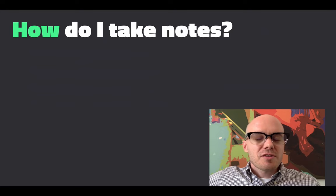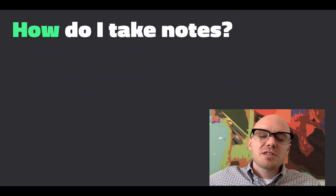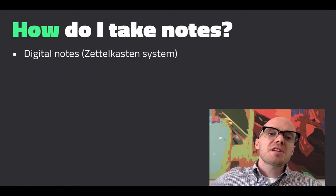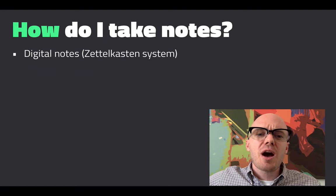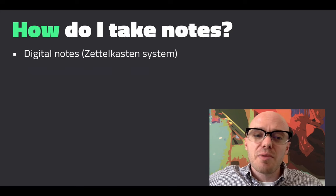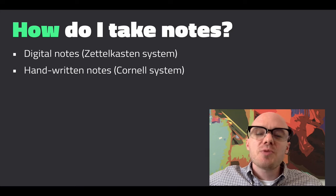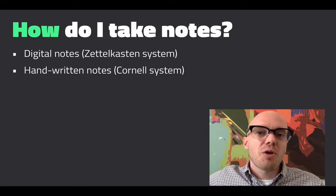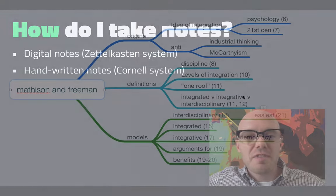So I've talked about how you take notes. Let's talk about how I take notes. I'm going to give you two examples. The first is going to be a digital example, and I'm going to show you how I use what's called the Zettelkasten system to build my own personal knowledge database. Then I'm going to show you a handwritten system called the Cornell system for taking notes on paper.